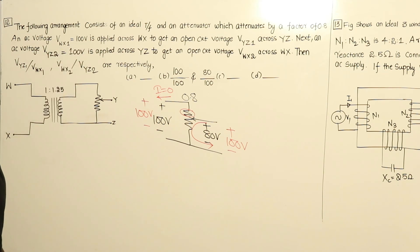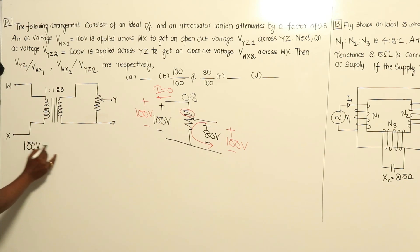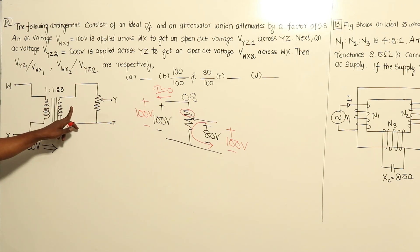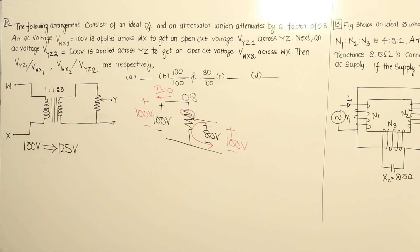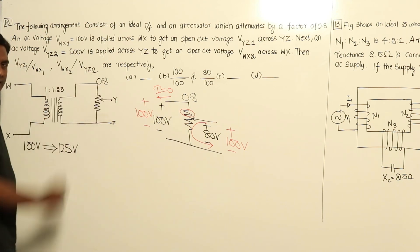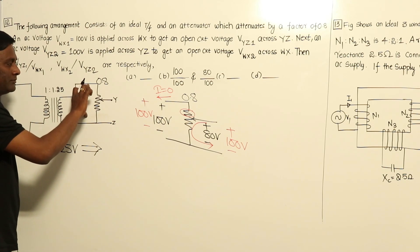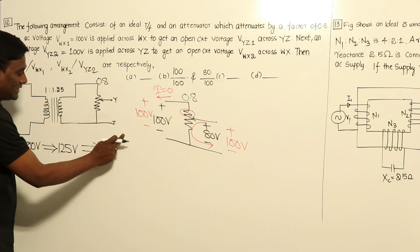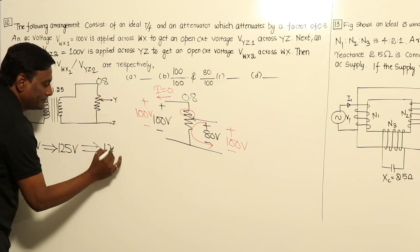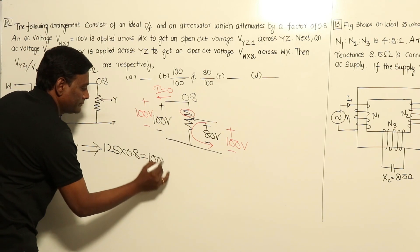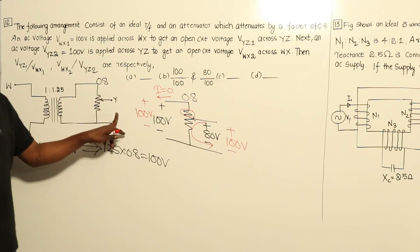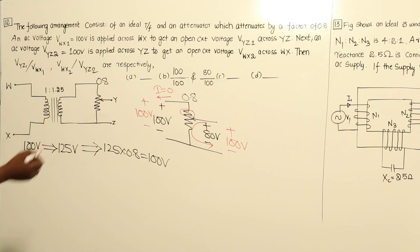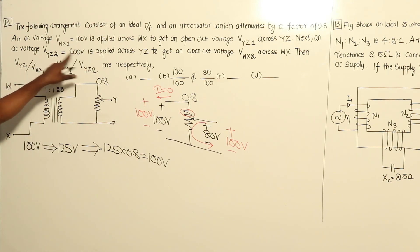In the first case, VWX is 100 volts. If I supply 100 volts on this side with a tap ratio of 1:1.25, this is a step-up transformer, so the output side gives 125 volts. With an attenuation factor of 0.8, VYZ = 125 × 0.8 = 100 volts.